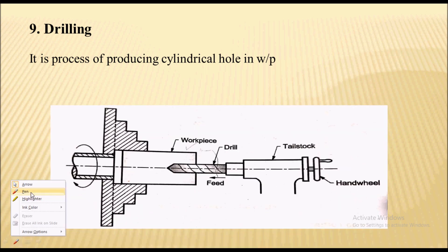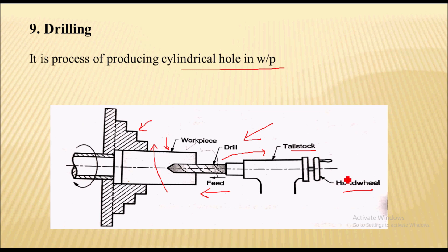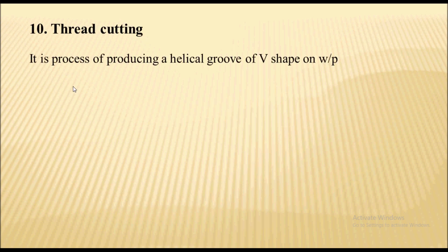The next operation is drilling. Drilling is an operation of producing a cylindrical hole in a workpiece. Here the workpiece is held in a chuck and the drill is held in the tailstock. The hand wheel is rotated to feed the drill against the rotating workpiece. Once the drill hole is created, the hand wheel is rotated in the opposite direction to remove the drill from the workpiece.